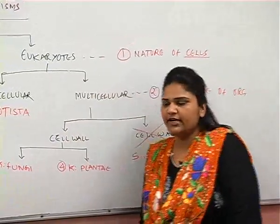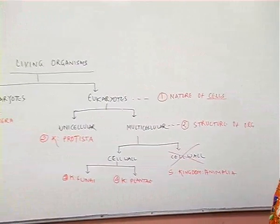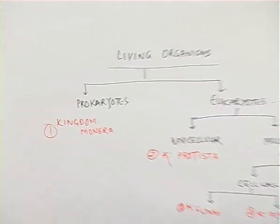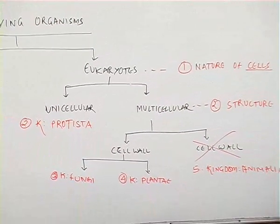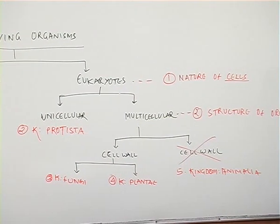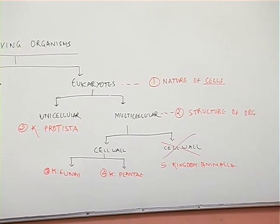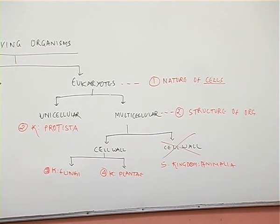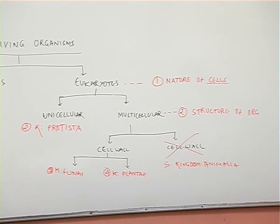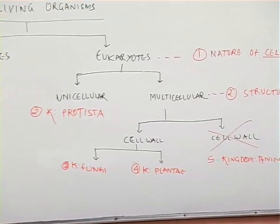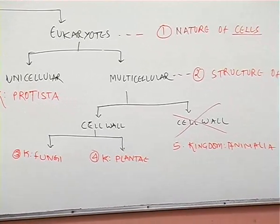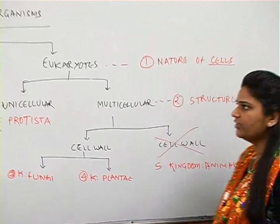Looking at this chart completely, living organisms at the first step are classified as prokaryotes and eukaryotes. Eukaryotes are further classified as unicellular and multicellular. Multicellular is further classified as cells having a cell wall and cells not having a cell wall. And five kingdoms emerge: Kingdom Monera, Kingdom Protista, Kingdom Fungi, Plantae, and Animalia. The entire living world is classified into five kingdoms.